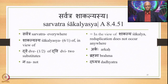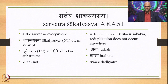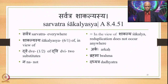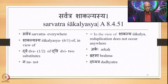Next we have the very important sutra 8.451: Sarvatra Shakalyasya. This sutra has two words: Sarvatra meaning everywhere, and Shakalyasya (6th/1st of Shakalya) meaning in view of Shakalya. Dve and Na are continued. So the meaning: in view of Shakalya, reduplication does not occur anywhere — there is no reduplication at all. For example, according to Shakalya, there is no reduplication in Arkaha, Brahma, or Dadhyatra.